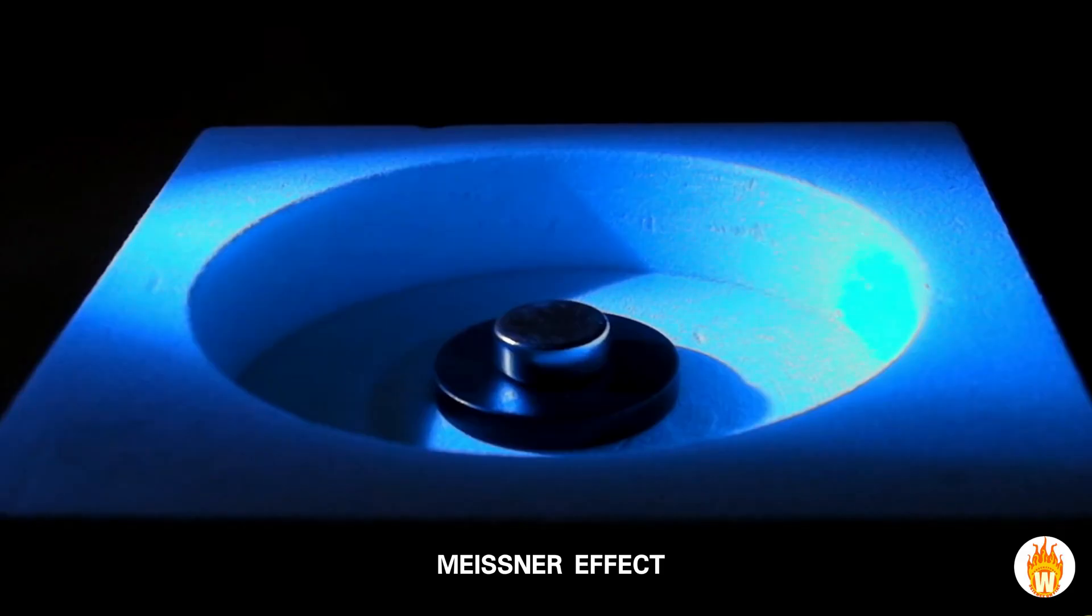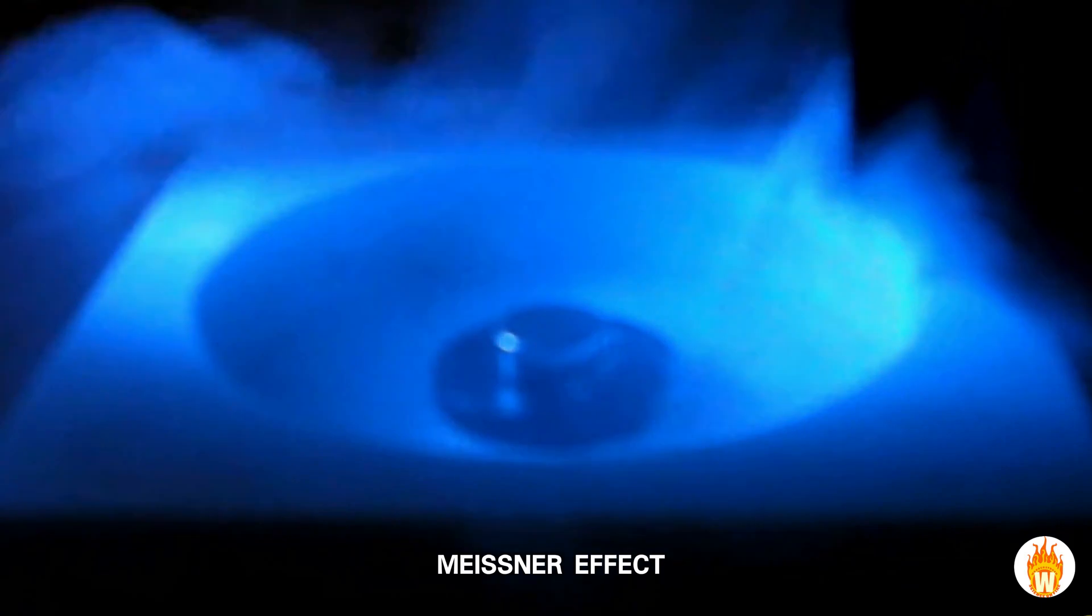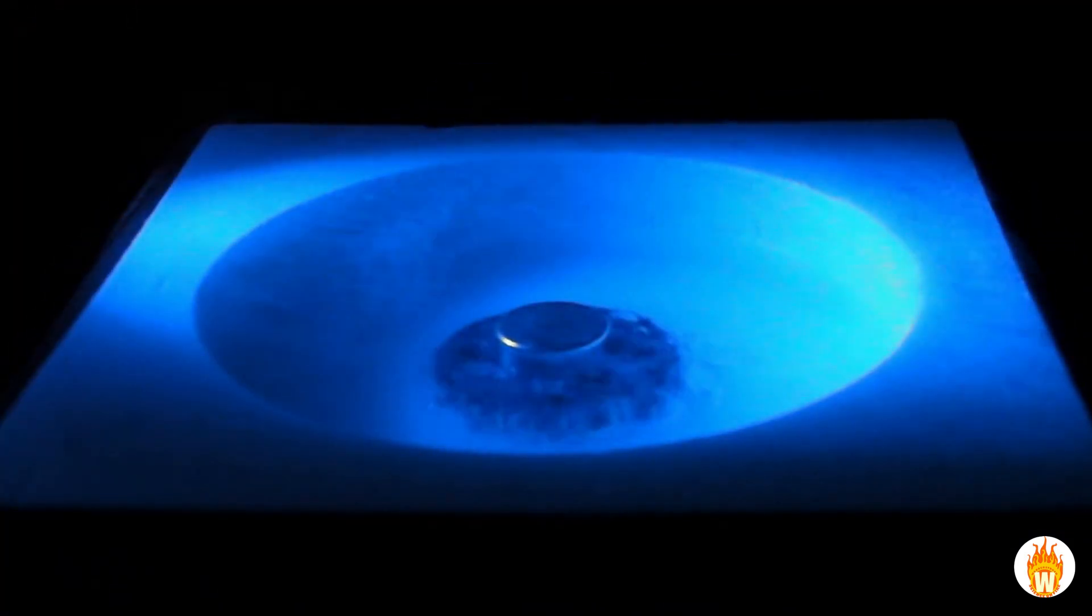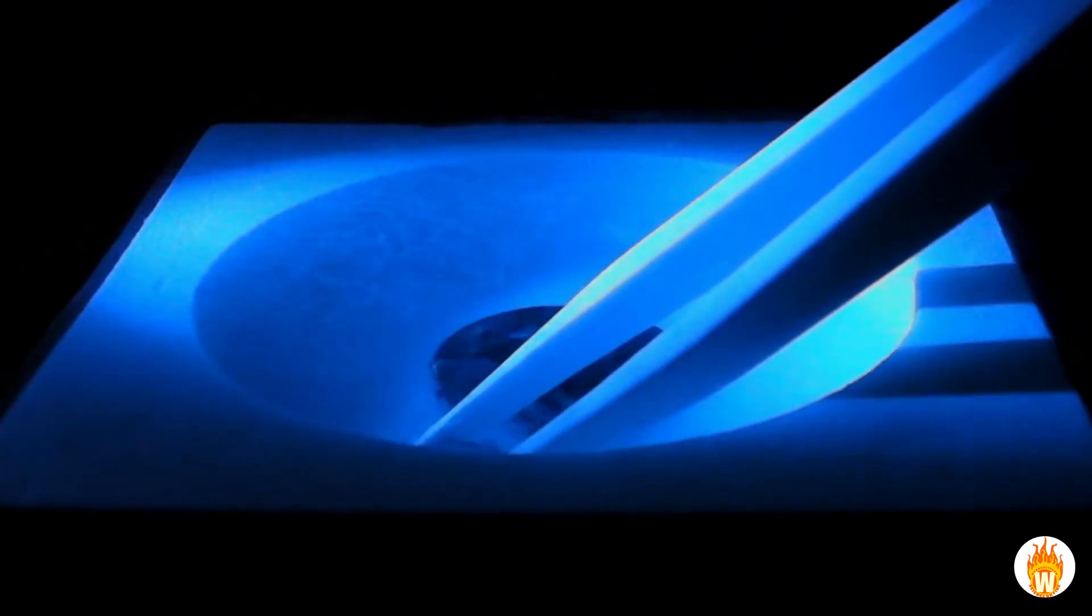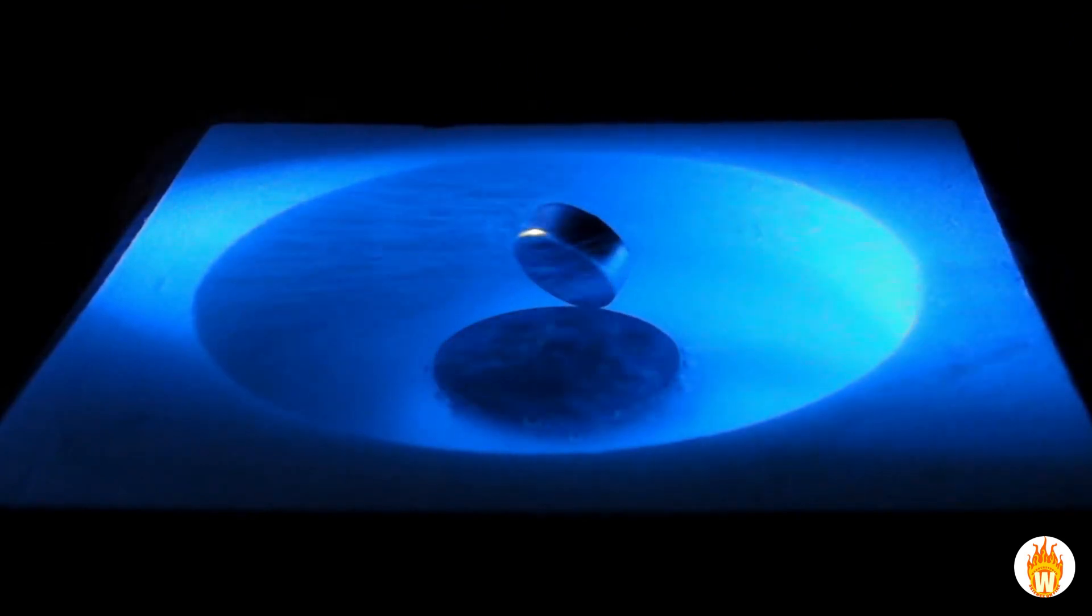When this yttrium-barium copper oxide puck is chilled down below its critical temperature with liquid nitrogen, it becomes a superconductor and magnetic field lines are expelled from its body. The magnet is able to levitate over the superconductor, but it is held in place only weakly.